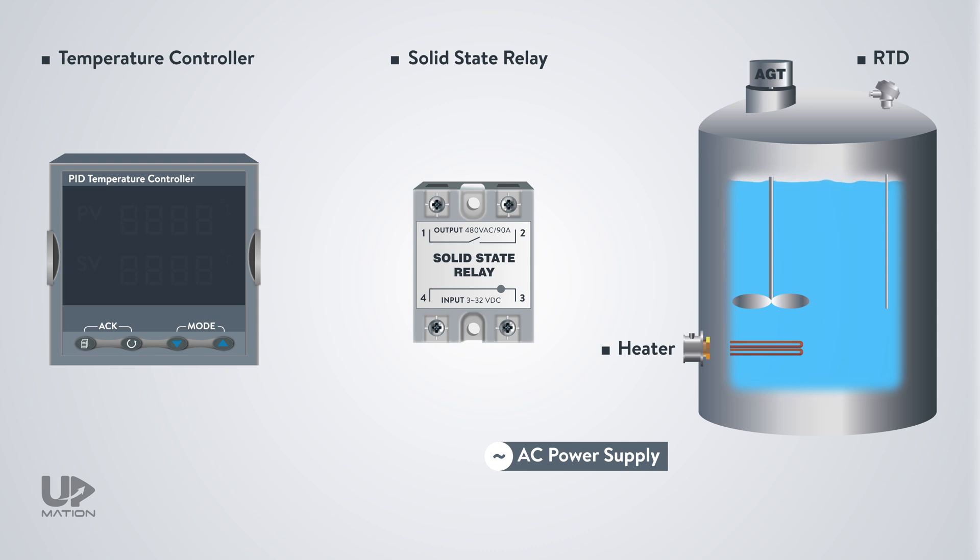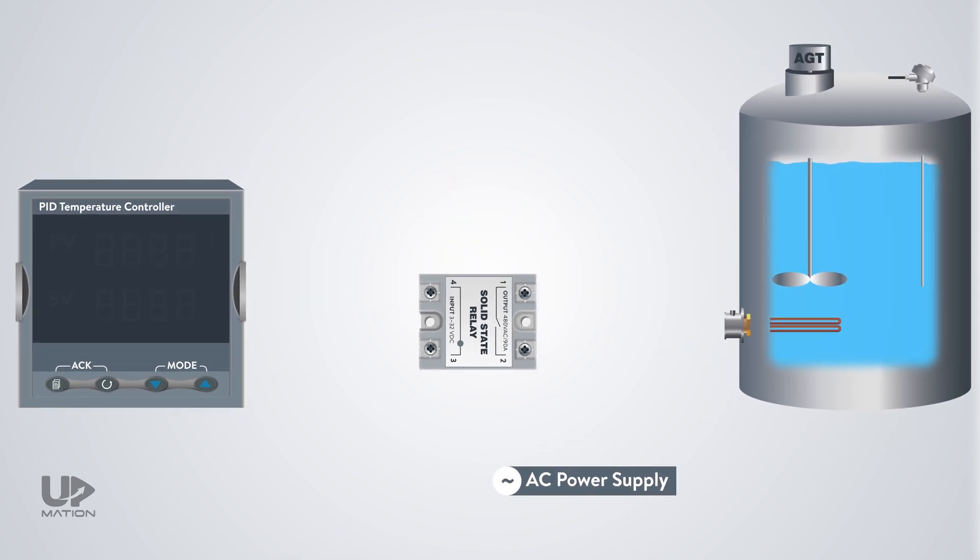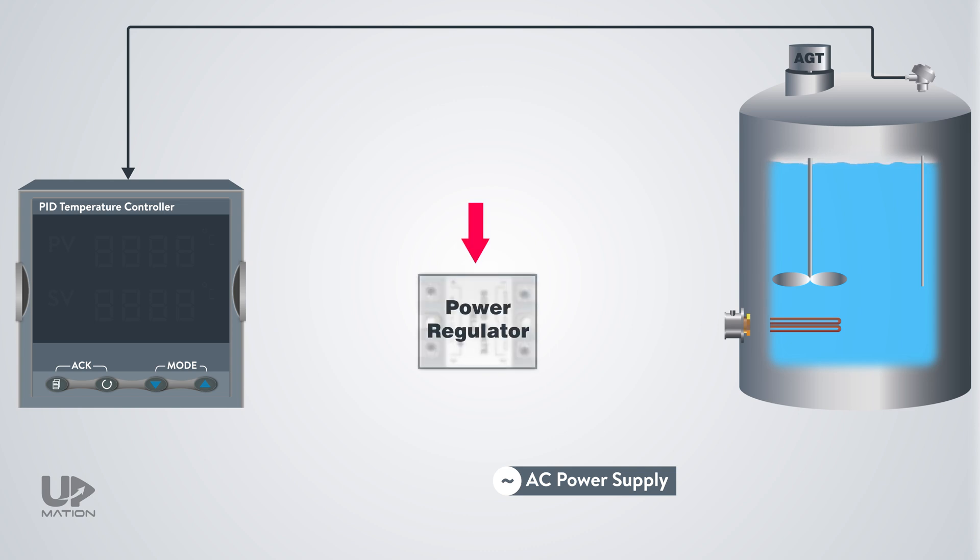The first step is to wire things up. The temperature sensor will be connected to the PID controller and sends its feedback to that. As we explained in the previous video, the solid-state relay will be a power regulator module between the PID controller and the load, which here is the process heater.